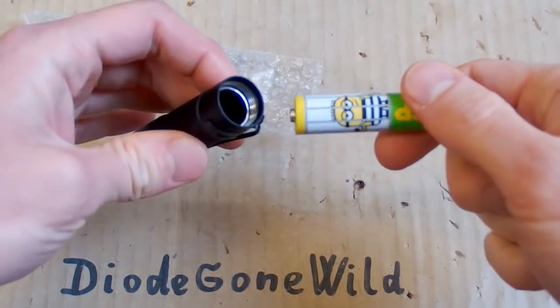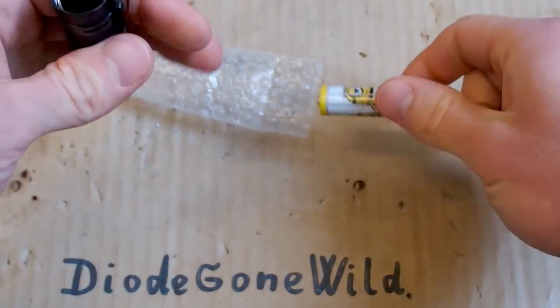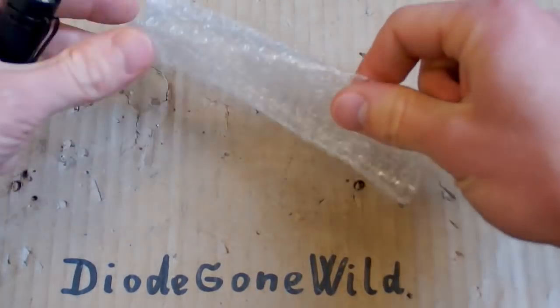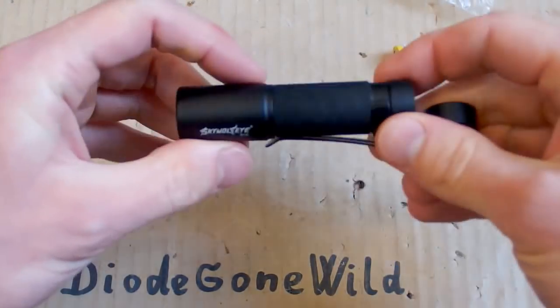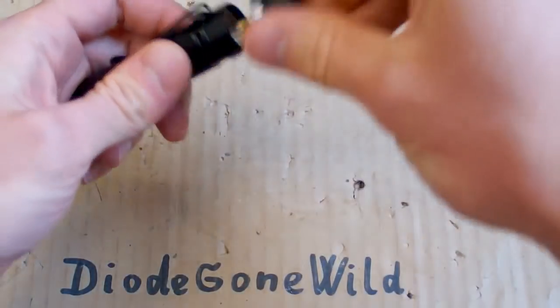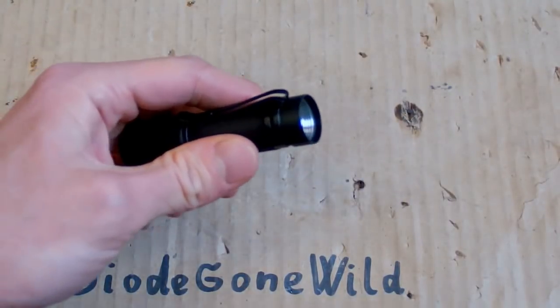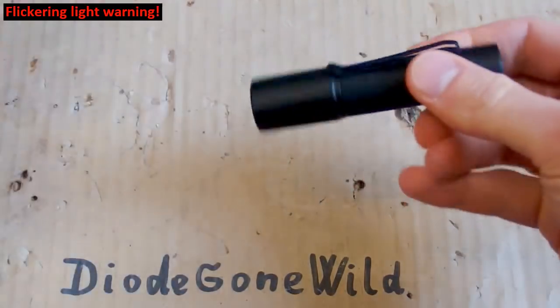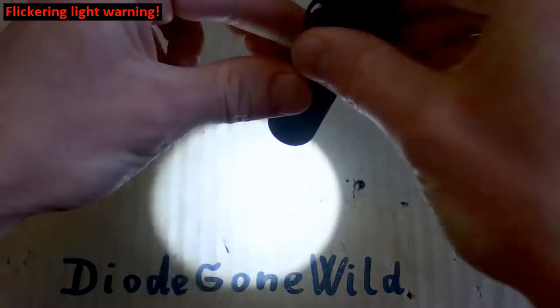Here you can see the battery - it actually wasn't included, it's my battery. Here's the space for the battery and it's actually zoomable. Let's try to zoom it with the battery in it, because without the battery it doesn't really produce much light, of course.